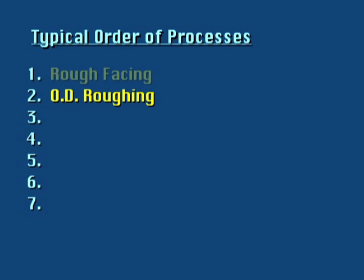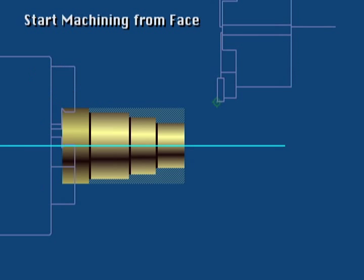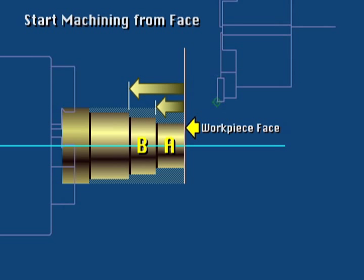The second step is normally OD roughing. When planning the OD roughing sequence, always start machining from the face of the workpiece. On this workpiece with three diameters, section A would be machined first, then section B, then section C.